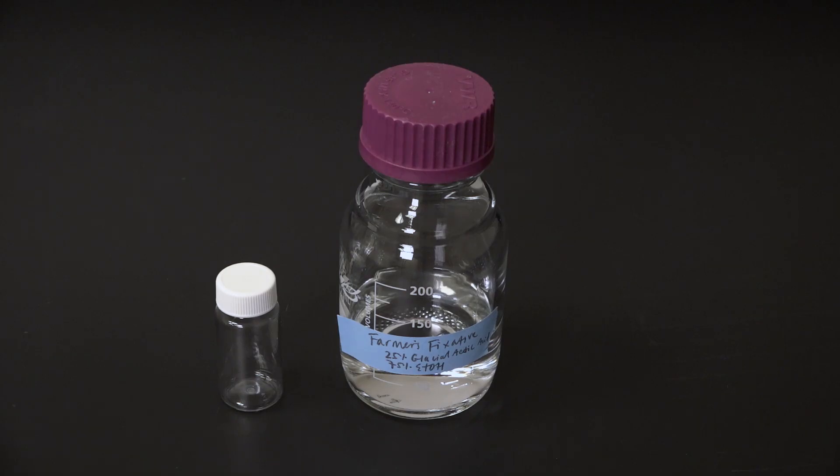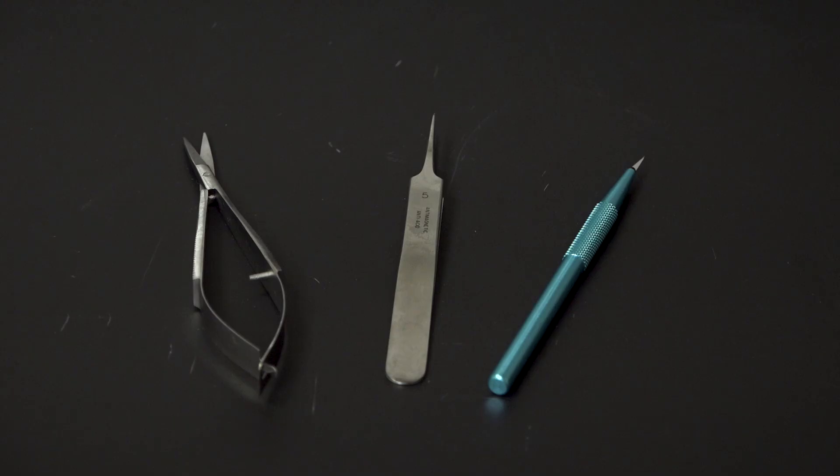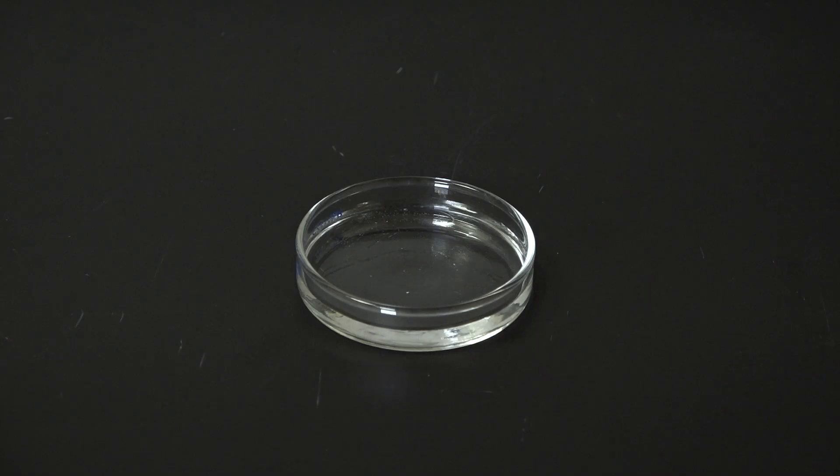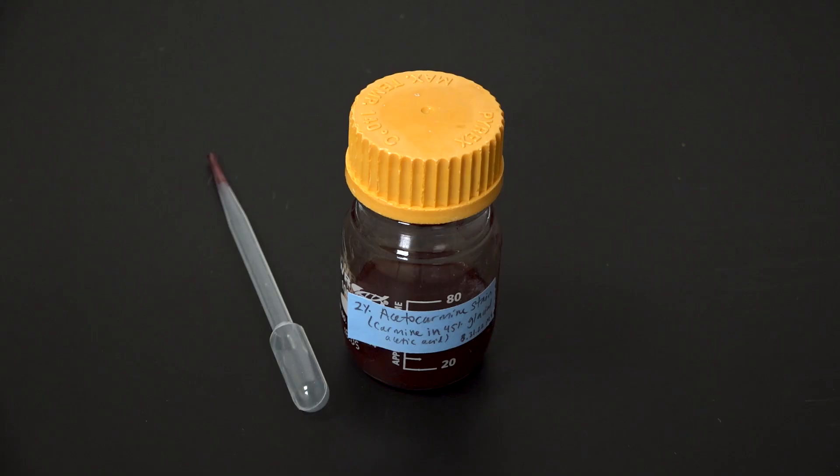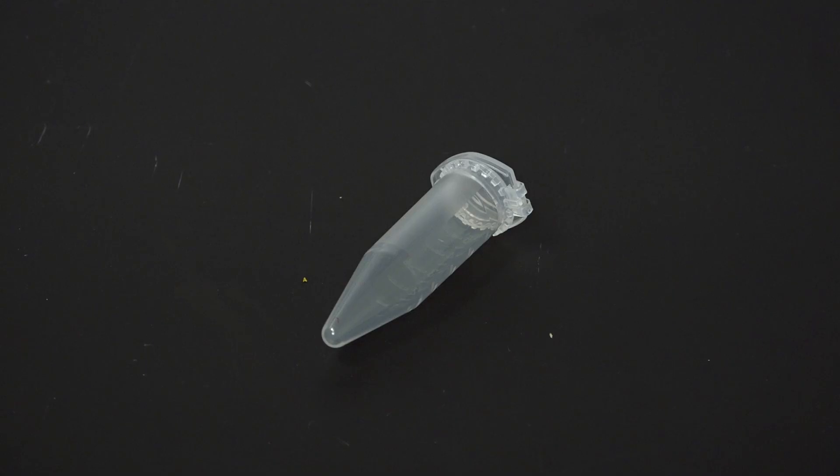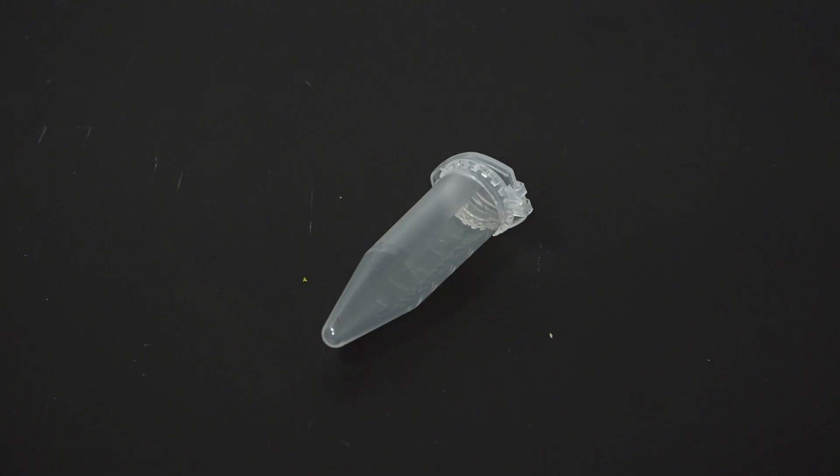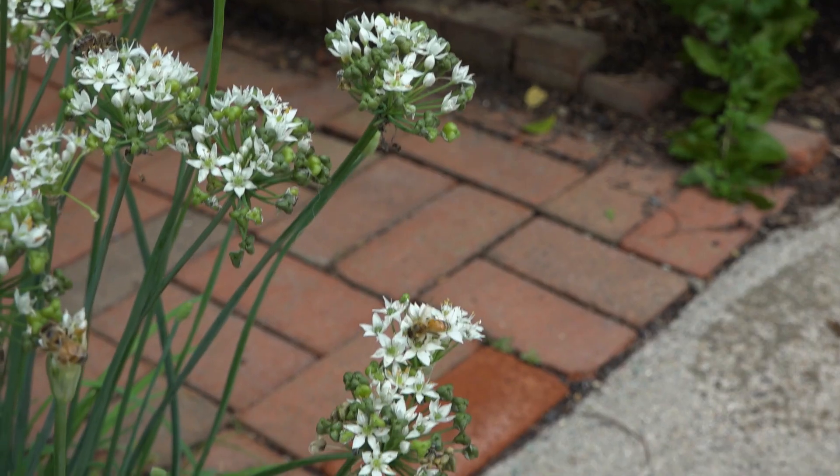You will need a vial of farmer's fixative, also known as one part glacial acetic acid, three parts ethanol, some dissection tools like forceps and scalpels, a dish of tap water, 2% acetocarmine stain and a pipette, microscope slides and cover slips, a blunt object like the bottom of this test tube, a light microscope, and flower buds.